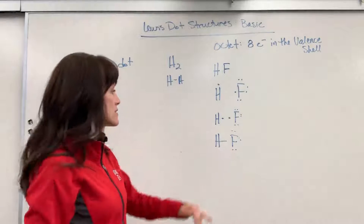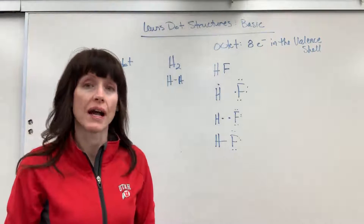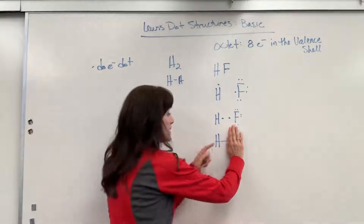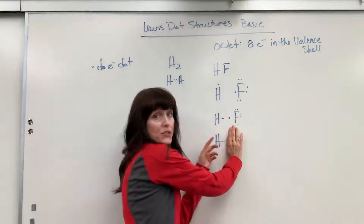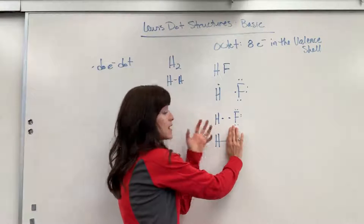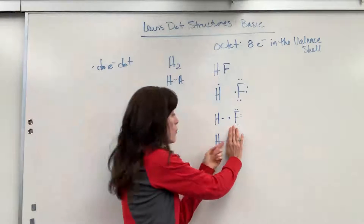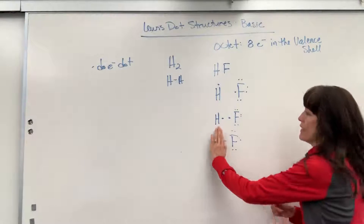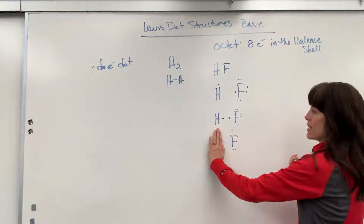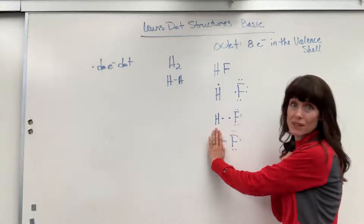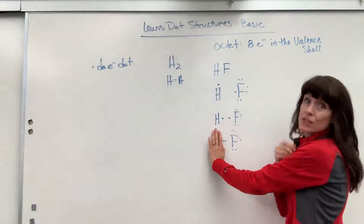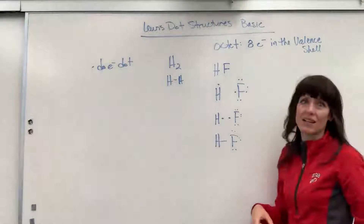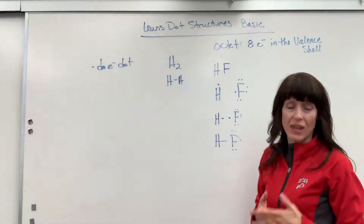That is the Lewis dot structure for hydrofluoric acid. The hydrogen senses both of those electrons, so it has the stability — the sense of having a full valence shell, one, two electrons. Fluorine, by the same token, senses those two electrons and thinks that both of those electrons belong to that fluorine. So it has a sense of two, four, six, eight electrons — super stable, that full octet.